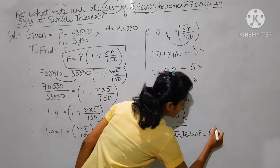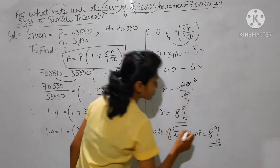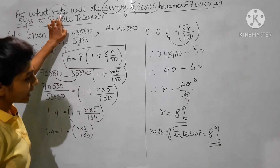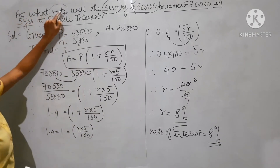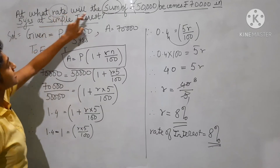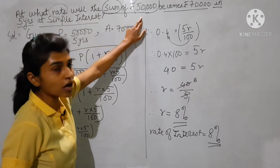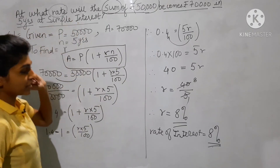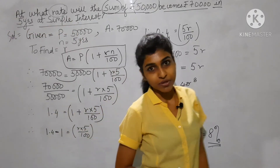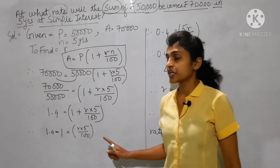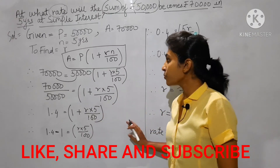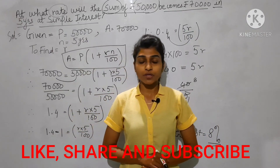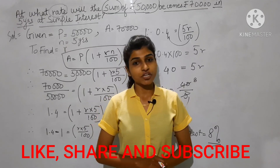Rate of interest is equals to 8 percent. So the final answer is 8 percent. At 8 percent, the sum of rupees 50,000 becomes 70,000 in five years at simple interest. This is the example of simple interest to find rate of interest. I hope you have understood. Thank you very much — please subscribe to my YouTube channel, like and share the video.